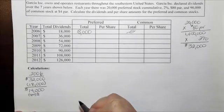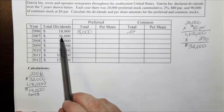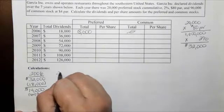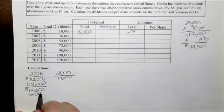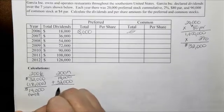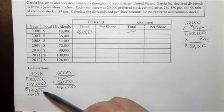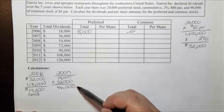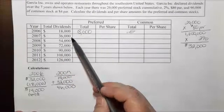In 2007, $36,000 was declared in dividends, and we have to come back and account for the $14,000 owed from the previous year. So in 2007 we have $14,000 owed from last year plus $32,000 that the preferred stockholders should receive this year, for a total of $46,000 that should be paid out. However, only $36,000 in total dividends were paid out for 2007.